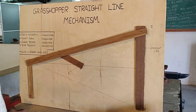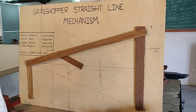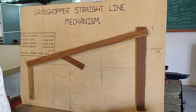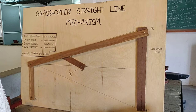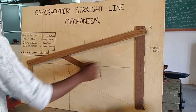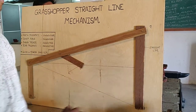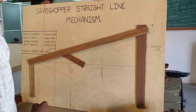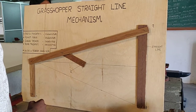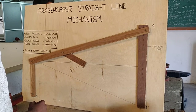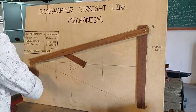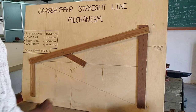Grasshopper Mechanism. This mechanism is a modification of the Scott Russell mechanism. In this mechanism, the slider is replaced by a link travelling in an arc about another fixed point. You can see both fixed points in it. It is named because of its resemblance to the grasshopper's hind legs.